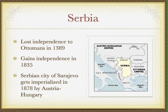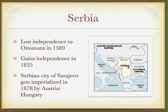Another example of land lost by the Ottoman Empire is Serbia. The Ottomans had controlled Serbia since 1389 — about 500 years. Serbia gained independence around 1835. Most famously, and this will be very important when we study World War I next month, the Serbian city of Sarajevo was imperialized by the Austro-Hungarian Empire in about 1878.